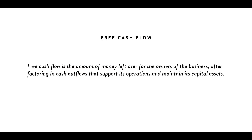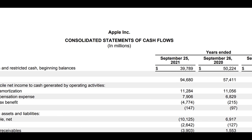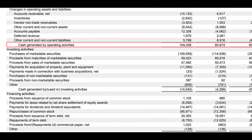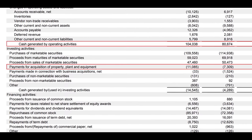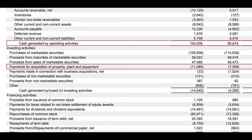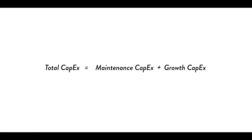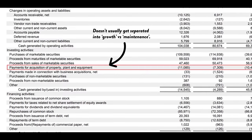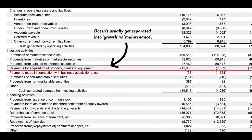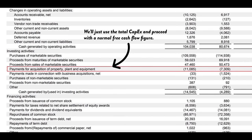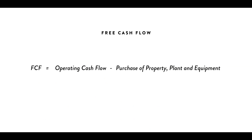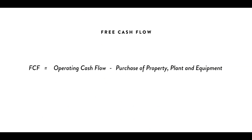Free cash flow is calculated from two numbers on the cash flow statement: the cash flow from operations — sometimes just called operating cash flow — minus the capital expenditure, alternatively known as the purchase of property, plant and equipment. If you wanted to get more precise, you'd eliminate the part of capital expenditure related to growth and expansion, so it would be cash flow from operations minus the capital expenditure needed just for maintenance. But this is very rarely reported by companies, so we'll just use free cash flow for this example — and using free cash flow is more conservative anyway, though slightly less accurate.